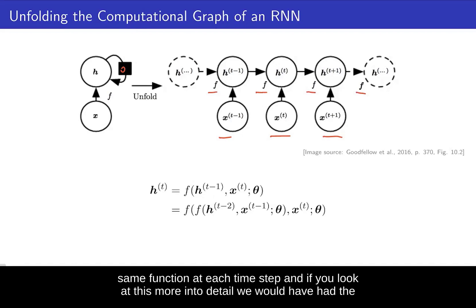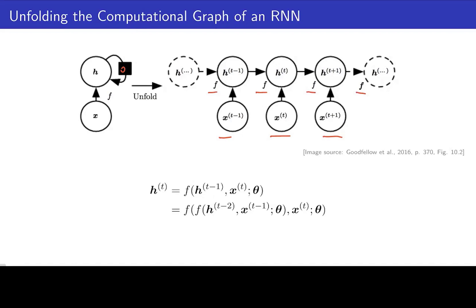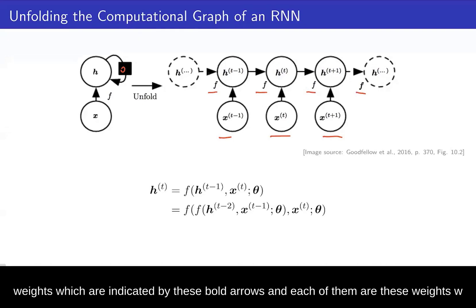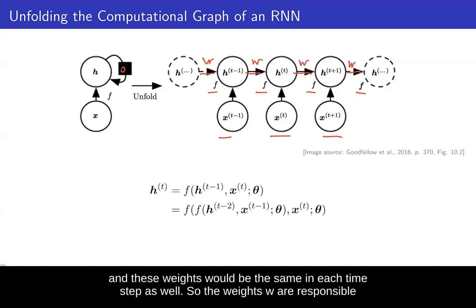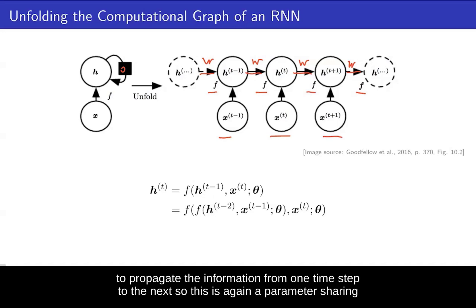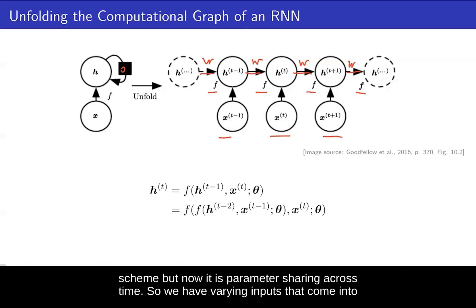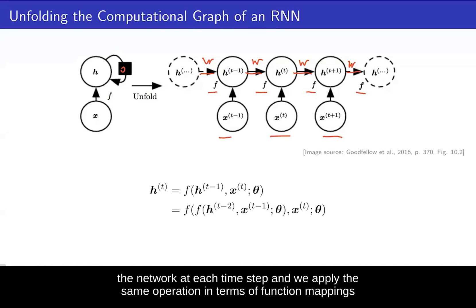The weights, indicated by bold arrows, are the same at each time step. These weights W are responsible for propagating information from one time step to the next. This is a parameter sharing scheme — now parameter sharing across time. We have varying inputs that come into the network at each time step, but we apply the same function mapping at every time step.